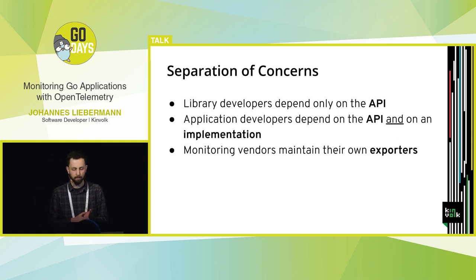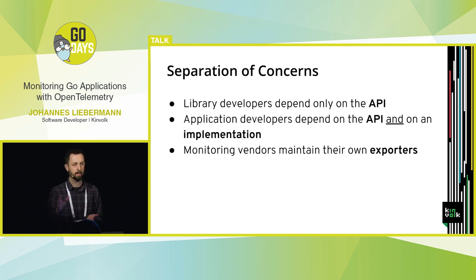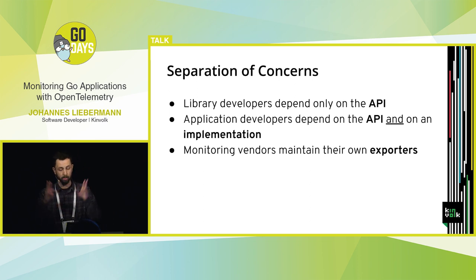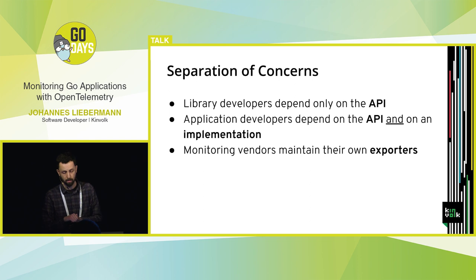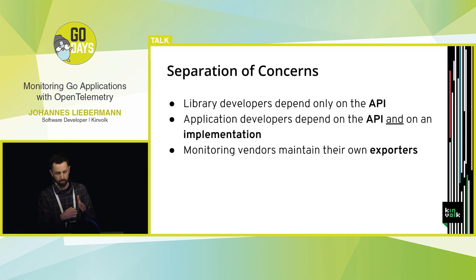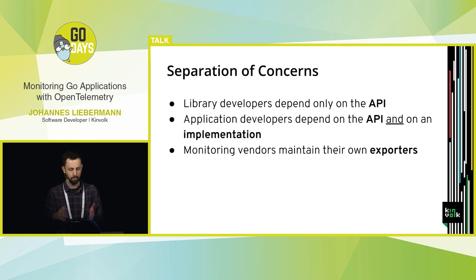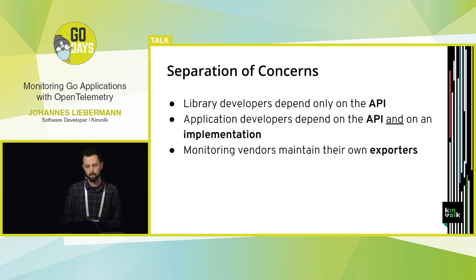This design gives us a nice separation of concerns. As a library developer of an open source library, I depend only on the API — I don't care about the implementation. As an application developer or end user of the tracing project, I consume the API, I also select an implementation, configure it, and plug it into the API. This is done typically once in some global init function or in main, and then I can instrument my whole app. Monitoring vendors maintain the exporters, which makes a lot of sense because they know their proprietary protocols the best.